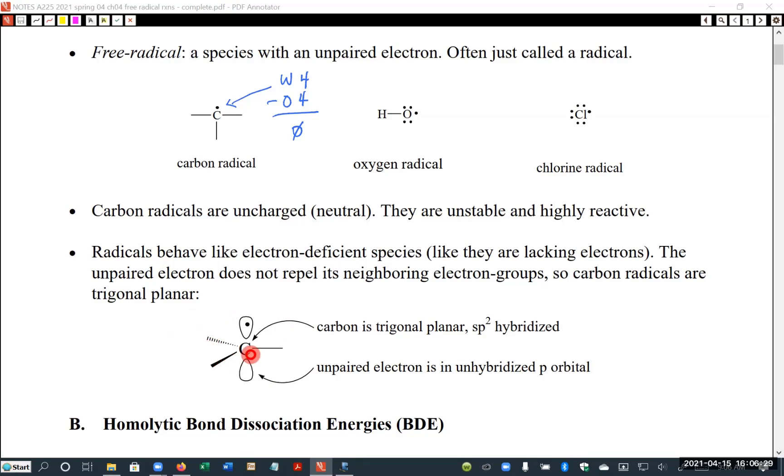Here are the three covalent bonds. They are repelling each other and becoming trigonal planar. And then there's a P orbital. It's not empty, however. It has one electron in it. So the carbon is trigonal planar, it's sp2 hybridized, and the unpaired electron is in an unhybridized orbital, a P orbital. And that's going to have an impact later when we look at stereochemistry.